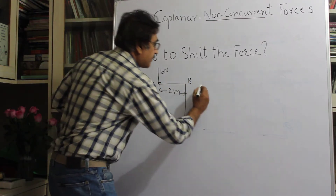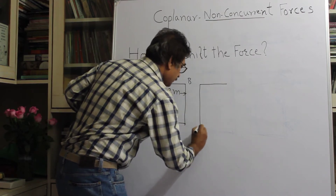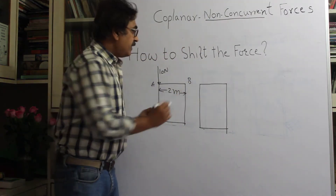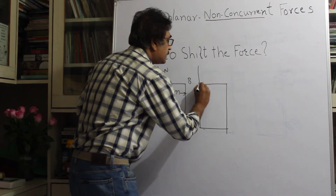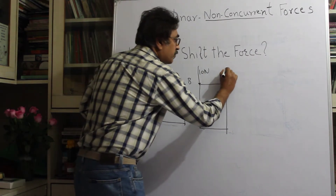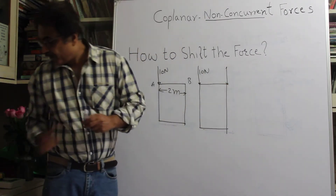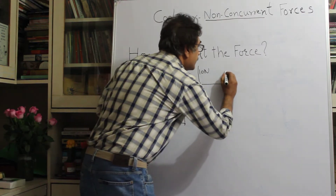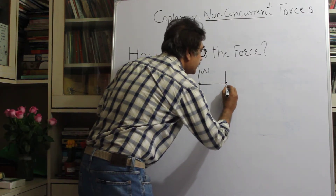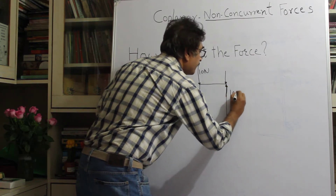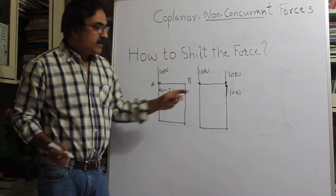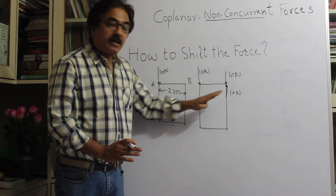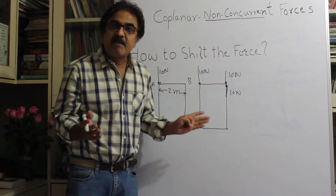Let me draw the same figure. We still have the original 10 newtons, and now at point B we apply two forces of magnitude 10 newtons: one acting downwards and one acting upwards. These two forces cancel each other, so we have not altered the system. The effect of the original 10 newtons remains, and these two figures are equivalent.